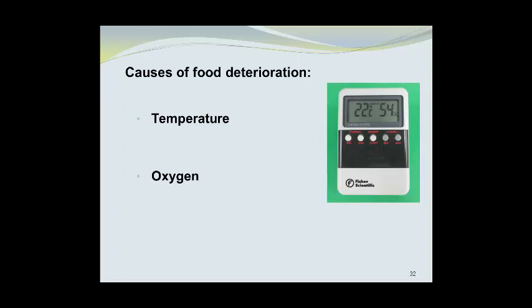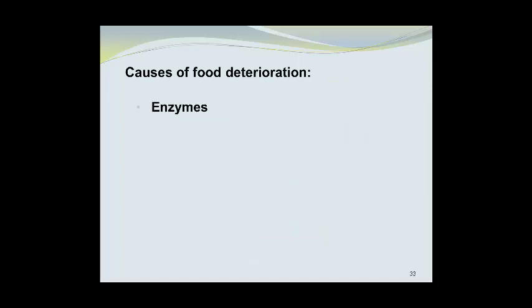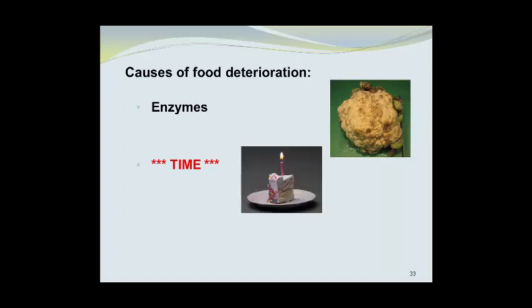Oxygen makes up 20% of the atmosphere around us and is quite reactive. Oxygen can react with oils to produce such things as oxidative rancidity, or it can act with other compounds to cause off flavors and other forms of degradation. Enzymes are biological catalysts that are naturally present in some foods. Here we see a cauliflower that has been left out at room temperature and has turned an undesirable shade of brown or purple. This is due to the enzyme polyphenol oxidase, which has catalyzed a reaction within the previously white cauliflower to produce this enzymatic browning effect. Time, of course, is the number one cause of food deterioration. Shelf life as long as one year or more is quite possible with certain foods. There are also other causes of food deterioration not covered here.